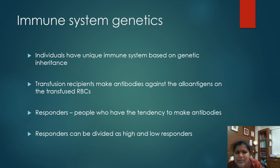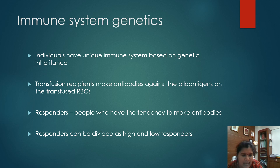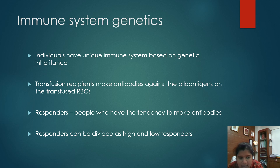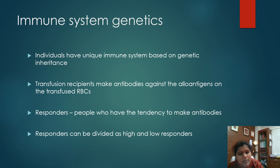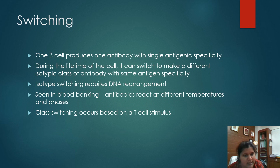Next, a small note on immune system genetics. Every individual has a unique immune system based on their genetic inheritance. Transfusion recipients can make antibodies against the low-frequency antigens on transfused donor RBCs. Those people who make such antibodies are called responders, and responders can be classified into high responders and low responders.